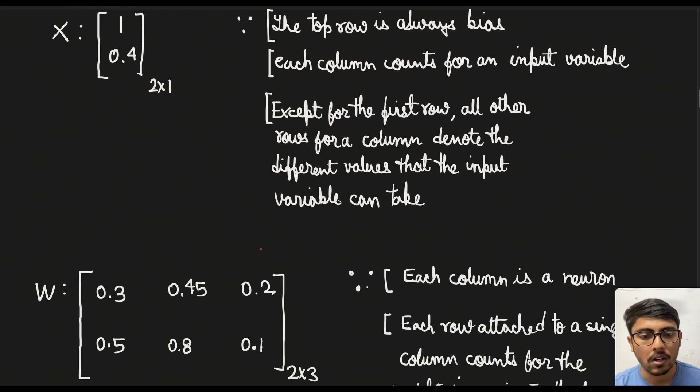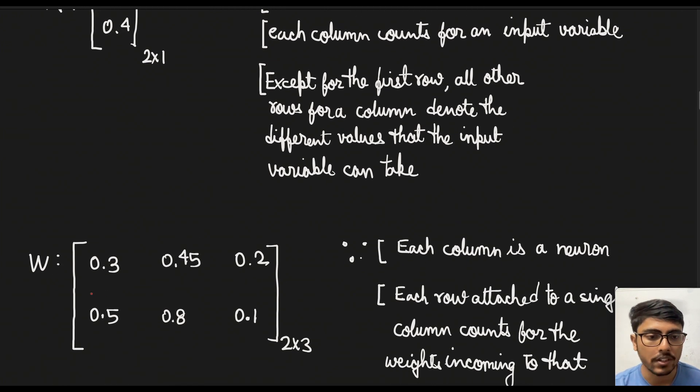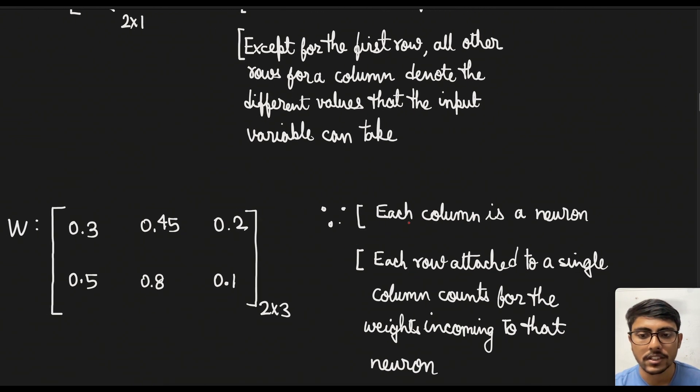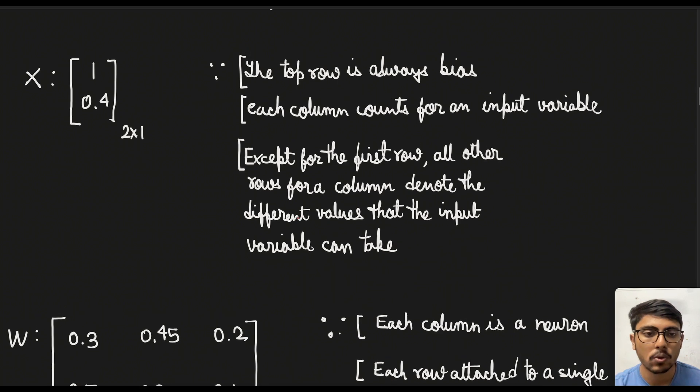Now we come to the weight matrix. So the weight matrix will be a 2 × 3 matrix in our case. Now we will see how and why. So each column in this particular weight matrix denotes a neuron.